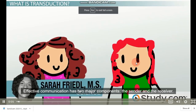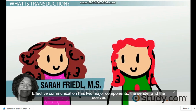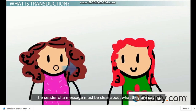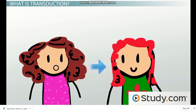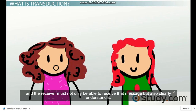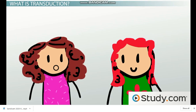Effective communication has two major components: the sender and the receiver. The sender of a message must be clear about what they are saying, and the receiver must not only be able to receive that message, but also clearly understand it.